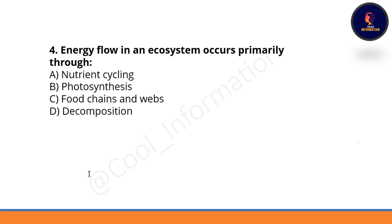Energy flow in an ecosystem occurs primarily through: nutrient cycling, photosynthesis, food chains and food webs, or decomposition. The correct option is option C — food chains and food webs — through which energy flow in an ecosystem occurs.